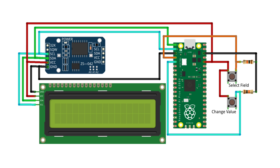Two push switches are connected to GPIO pins number 2 and 3 of the Raspberry Pi Pico board. We can select the field to update through the select field push switch, and after selecting the field, we can change the value of the selected field through the change value push button.